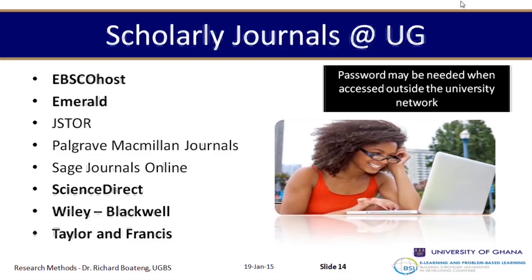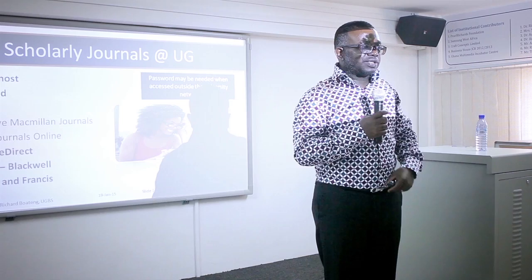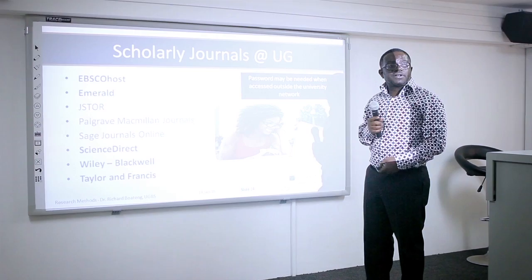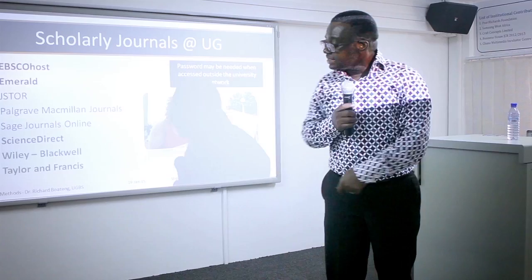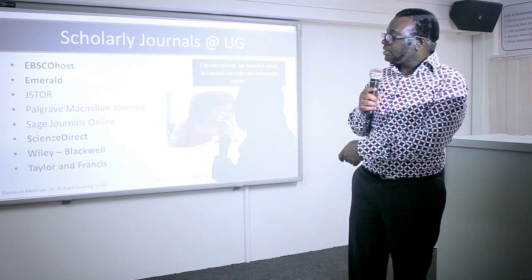These are publishers that have their own databases — collections of their own journals. For someone from a business school, most of these journal databases will be relevant. Science Direct is very good for scientific information: computer science, engineering, and physical sciences — less so for social sciences. Social sciences benefit more from the other databases like EBSCOhost, Sage, or Emerald.